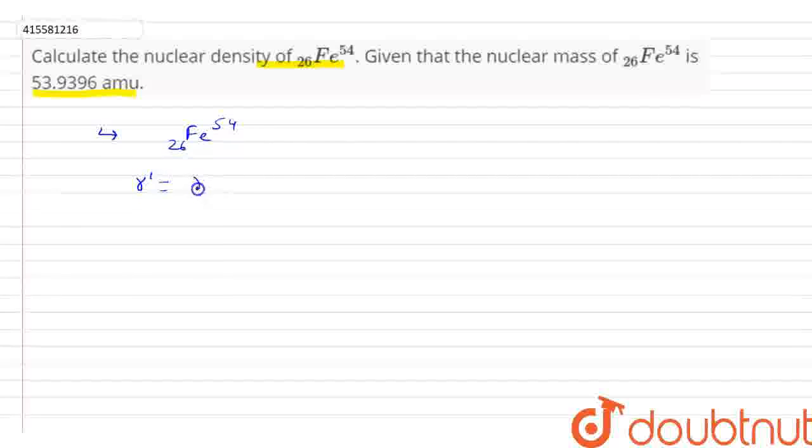The radius is equal to r₀ times A^(1/3), where r₀ is a constant and A is the mass number. For Iron, the mass number A is 54.